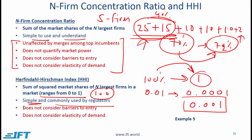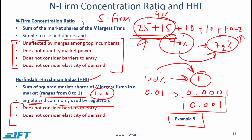The limitations of HHI are that it does not consider barriers to entry and it also does not consider elasticity of demand. I want you to do Example 5, which requires you to calculate HHI, and there is also a note in this section about calculating the concentration ratio. It is fairly simple but I want you to read it nevertheless. Generally there is a high probability of a question involving HHI or the N-firm concentration ratio — you are more likely to see HHI though.